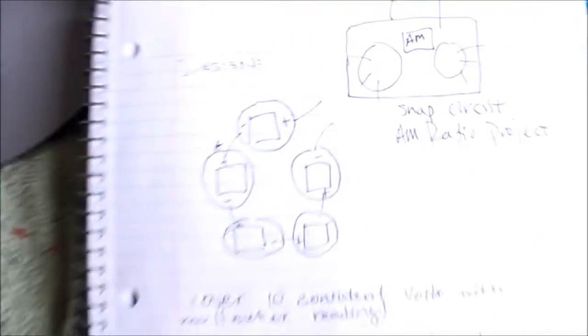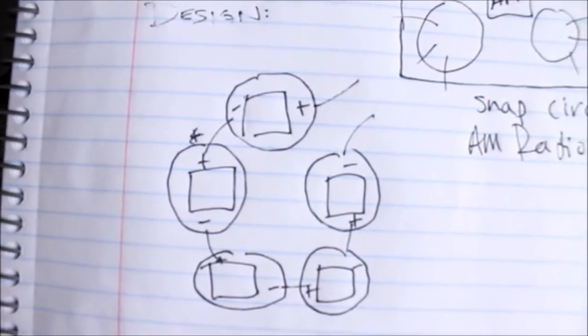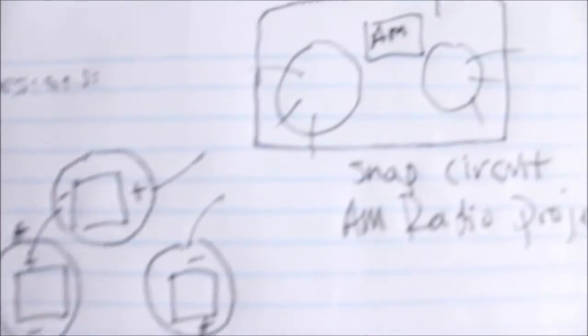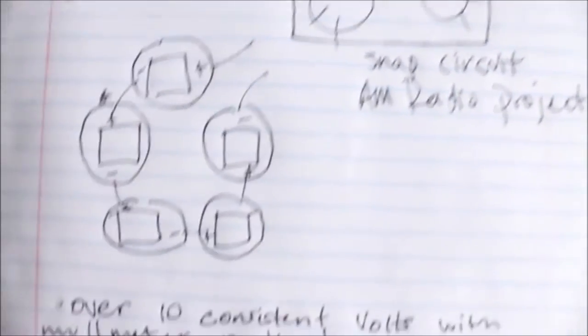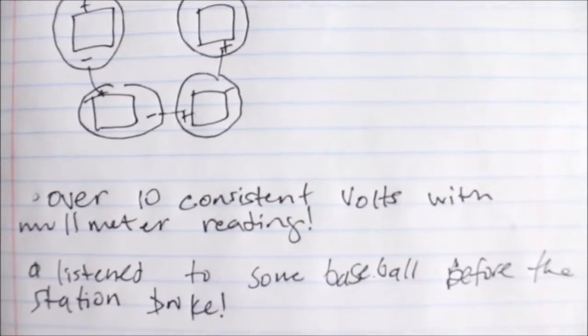And my design, my schematics, basically I just hooked up a circuit in series, positive negative positive negative positive negative, until I got to the radio and I consistently read over 10 volts with the multimeter.